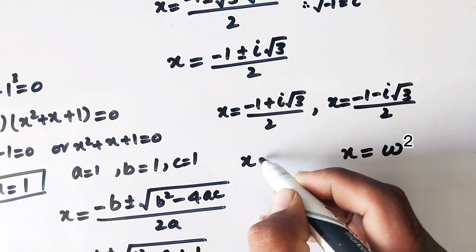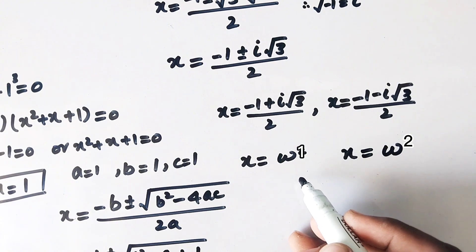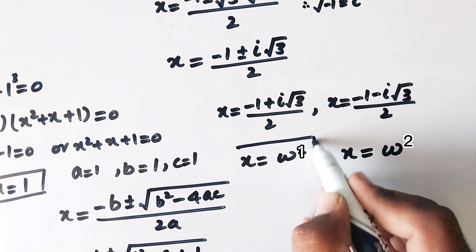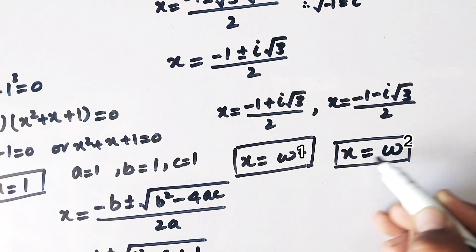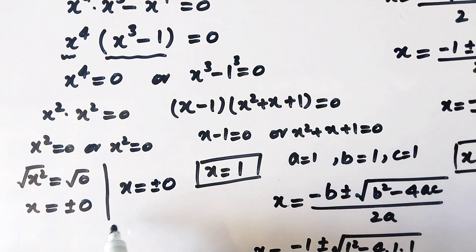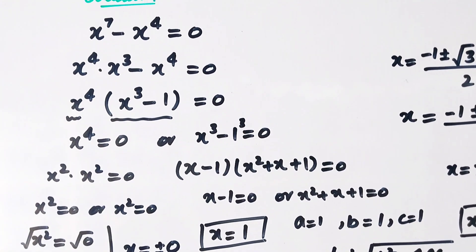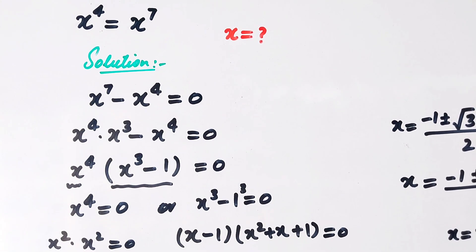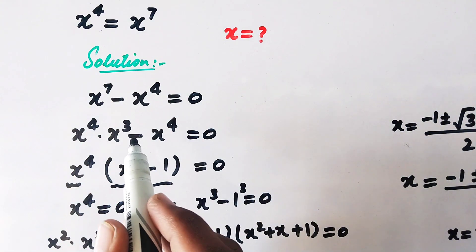So x equals omega. In summary, the values of x we have found are: omega squared, omega, 1, and plus or minus 0 (counted twice). This gives a total of 7 values for x, which is consistent with solving a 7th degree equation — we have found all 7 roots of x.